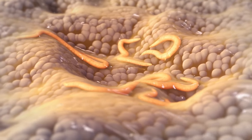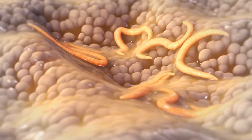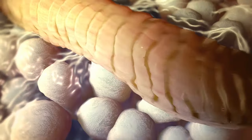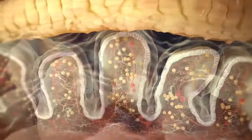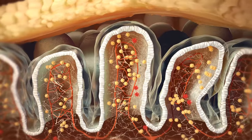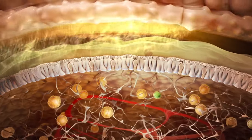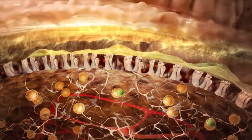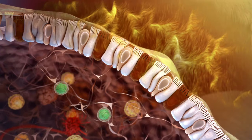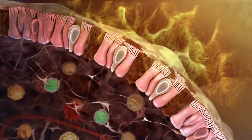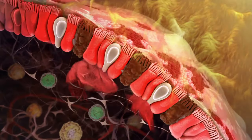ILC2s contribute to responses against helminths. These parasitic worms release enzymes that digest the mucous barrier and cause massive cell death. Epithelial cells sense the danger signals released by the dying cells and produce alarmins.